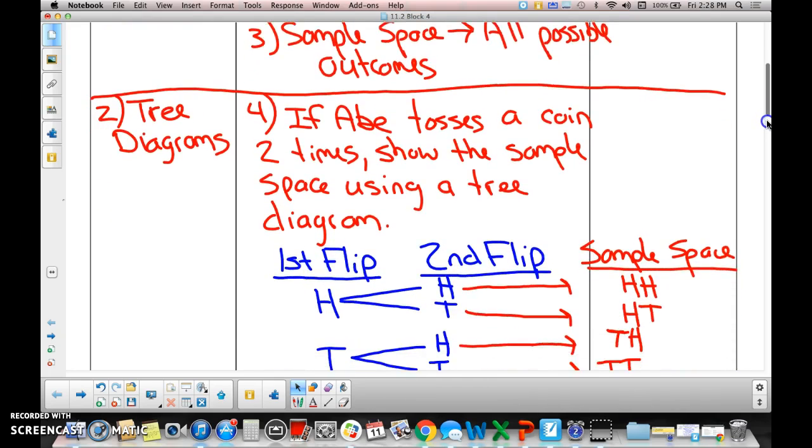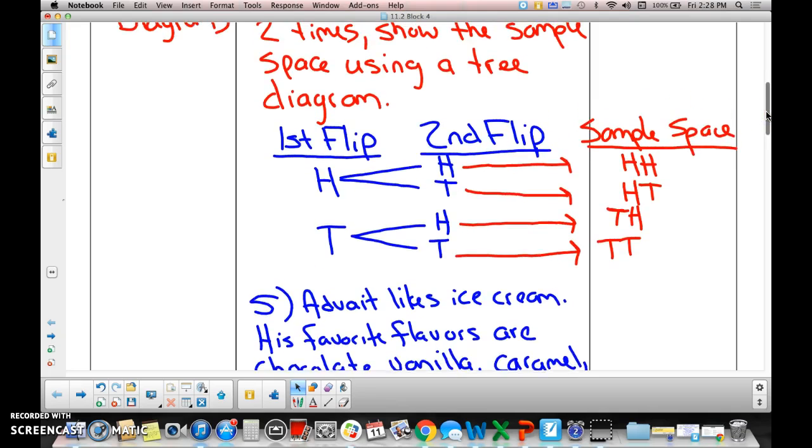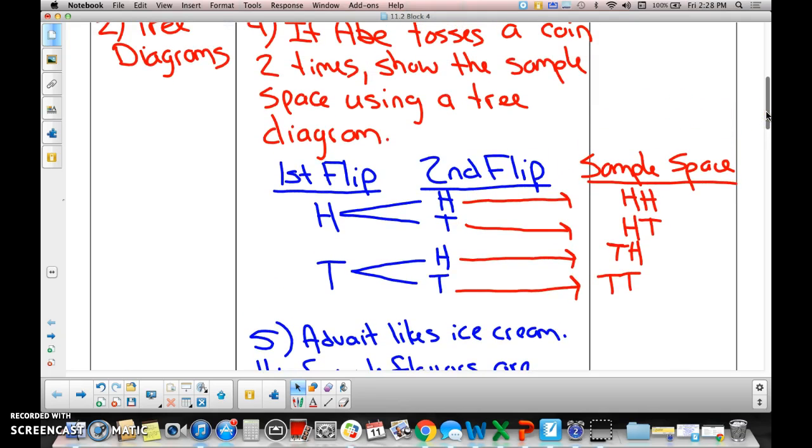So Abe was tossing a coin. We wanted to know what would be the sample space, what were all the possible outcomes if he flipped a coin twice. So we drew ourselves a tree diagram. On the first flip, he could get a head or a tail. On the second flip, if he had a head, he would get a head or a tail. And on the second flip, if he had a tail, he'd get a head or a tail. And all together, these were our sample spaces or possible outcomes.